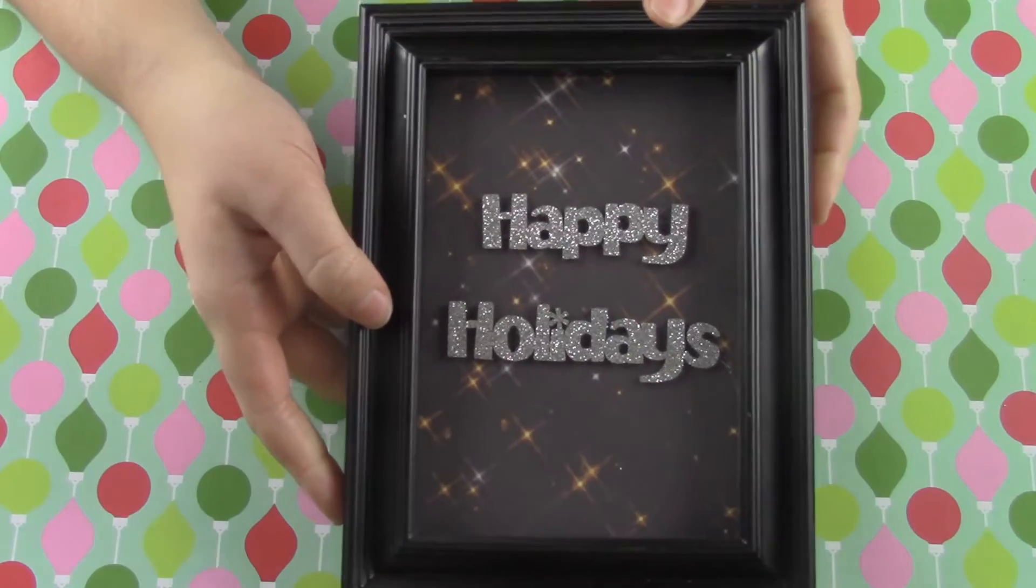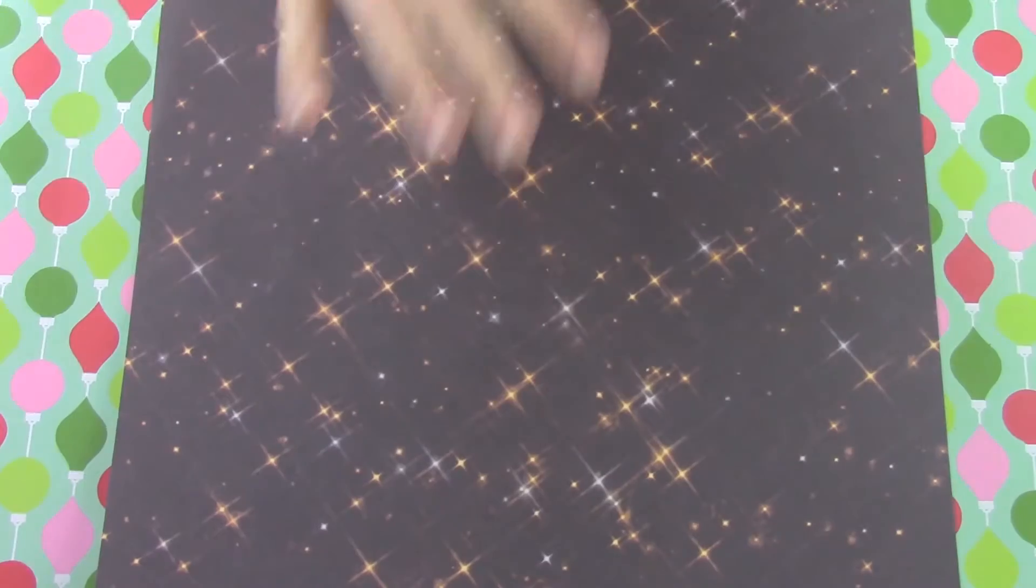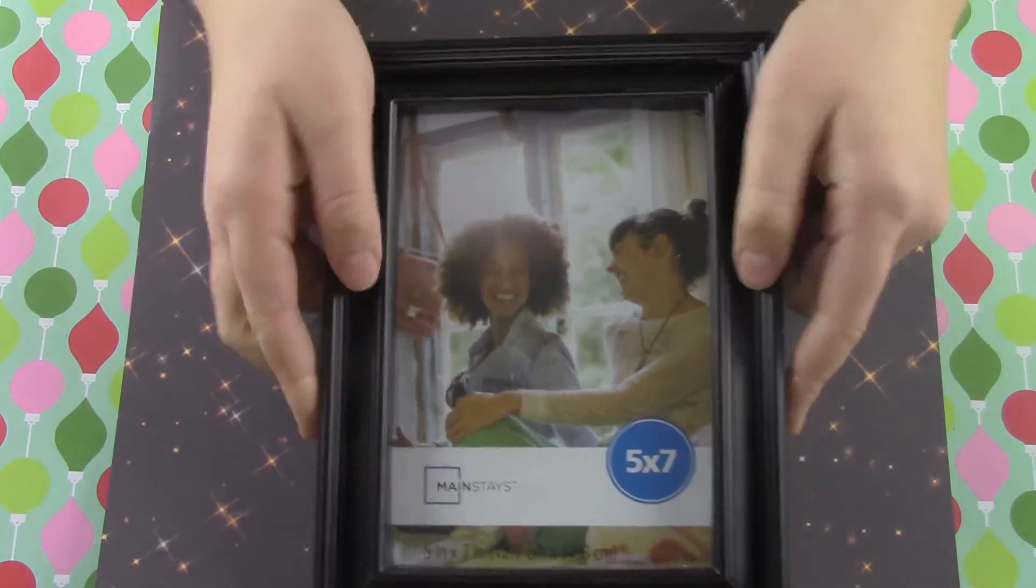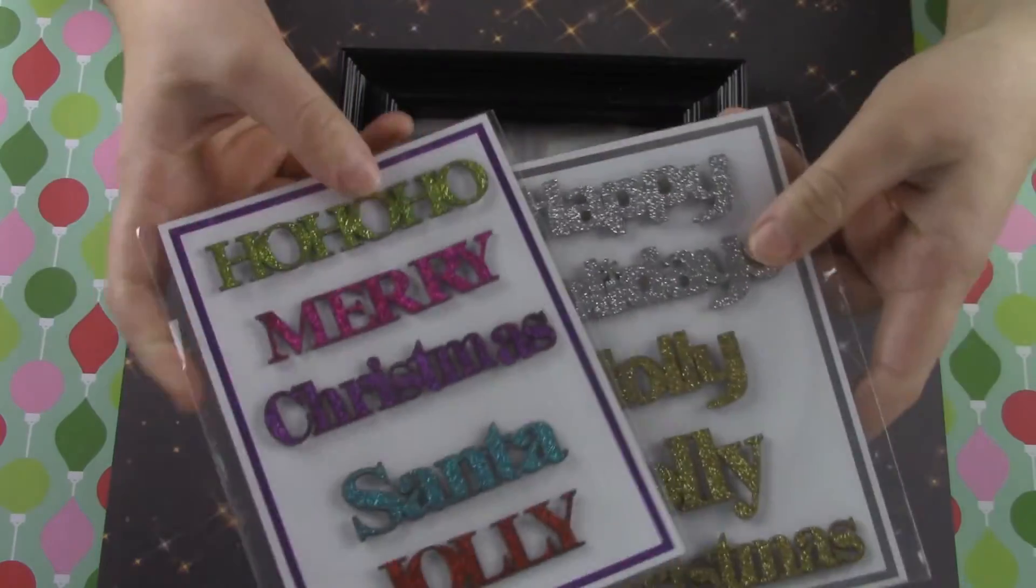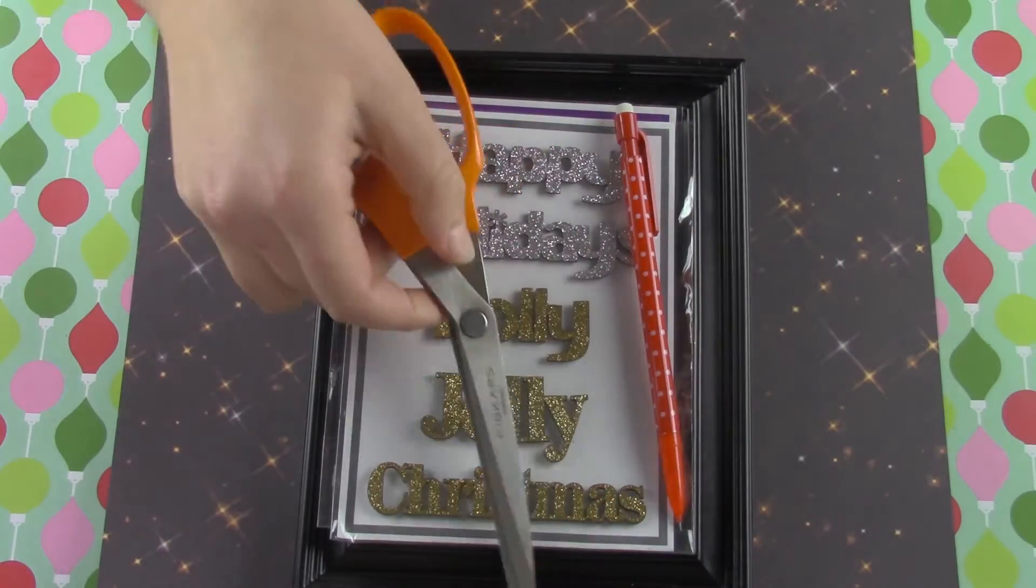Another way to make a cute Christmas picture frame is to use some scrapbook cutouts. For this you'll need a piece of cardstock, a picture frame, the cutouts which I got mine at Michael's for $1.50, a hot glue gun and a glue stick, a pencil, and a pair of scissors.